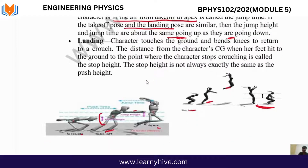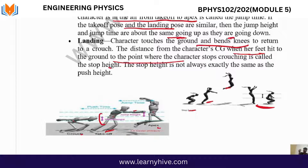Landing is when the character touches the ground and bends the knees to return to the crouch position. The distance from the centre of gravity when the feet hit the ground to the point where the character stops crouching is called the stop height. The stop height is not always exactly the same as the push height.